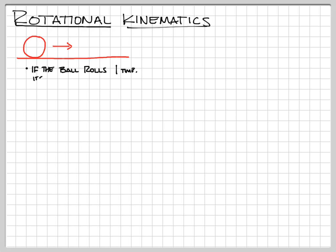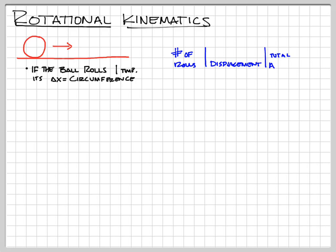Let's say the ball rolls one time. Its delta x is just going to be one circumference. Let's put this stuff in a table so we can keep up with it. The table is going to have a number of rolls for one column, the distance that we travel — our displacement — in another column, and then the total angle that we rotate through. For this first one, we have one roll and the displacement is 2πr. When we talk about total angle, imagine putting a dot on that wheel and when it rolls, we measure with a protractor how much of an angle it turned through. In this case, it's going to be 360 degrees.